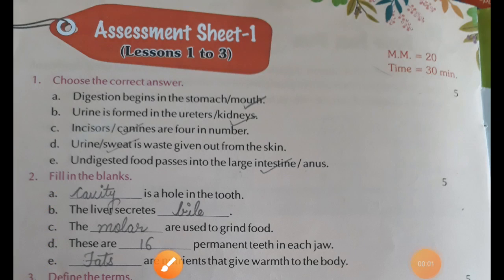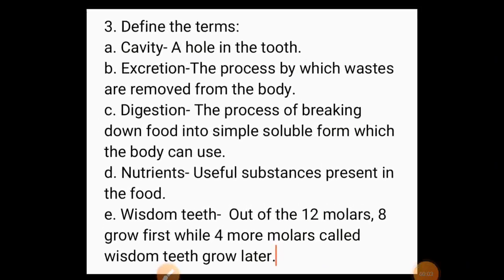Now define the following terms. A: Cavity — a hole in the tooth. B: Excretion — the process by which waste are removed from the body. C: Digestion — the process of breaking down food into simple soluble form which the body can use. D: Nutrients — useful substances present in the food. E: Wisdom teeth — out of the 12 molars, 8 grow first while 4 molars called wisdom teeth grow later.